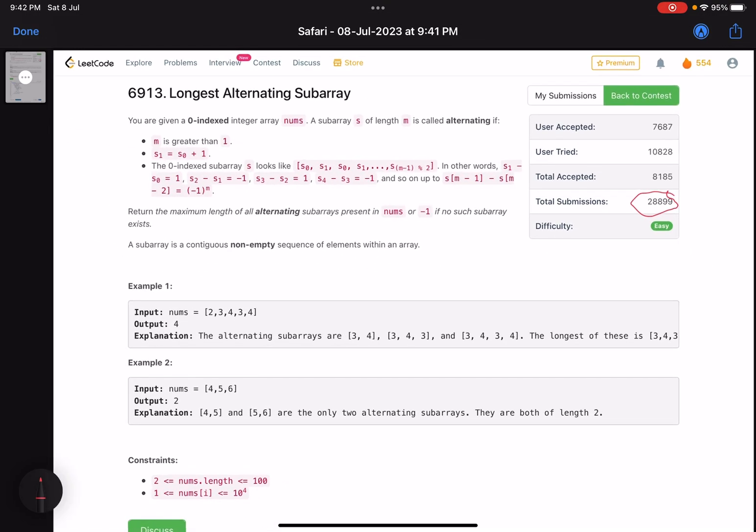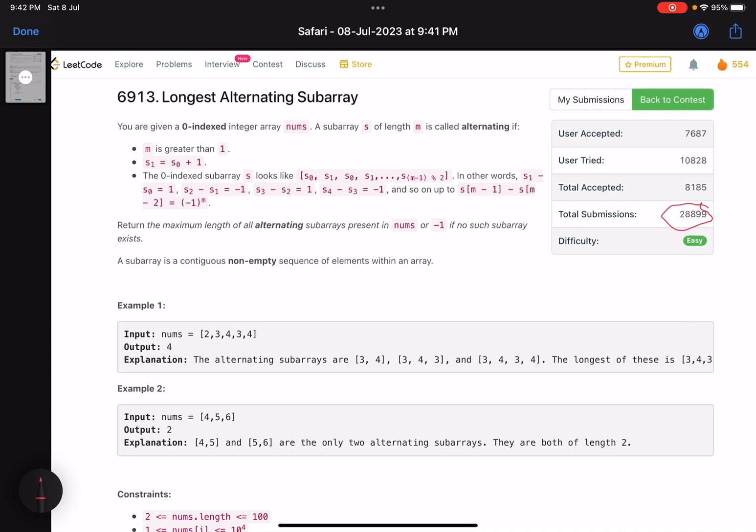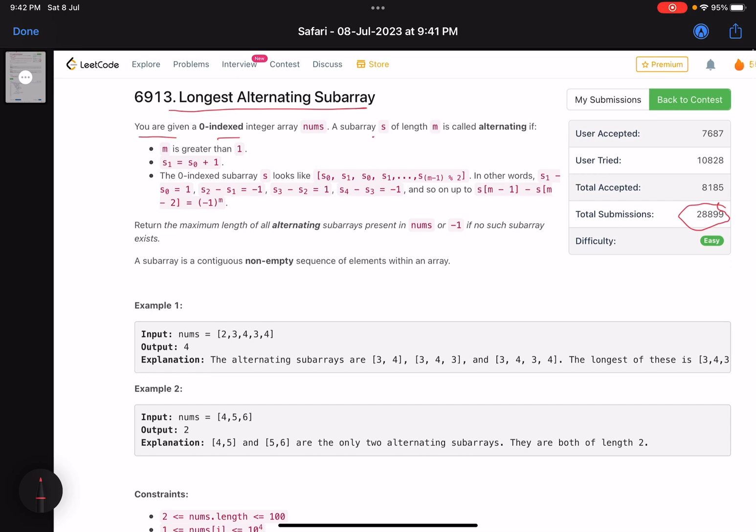But if you just do what the problem is asking you to do, just implement it, it won't cause any issues. Let's see what the problem is asking us to do. The problem name is Longest Alternating Subarray. You are given a zero-indexed integer array nums. A subarray s of length m is called alternating if m is greater than one.